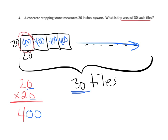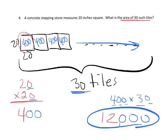So now we have to do 400 times 30. So 4 times 3 is 12, and then we've got 1, 2, 3 extra zeros. So our answer is 12,000, and really, we should call this inches squared. And that is our answer.